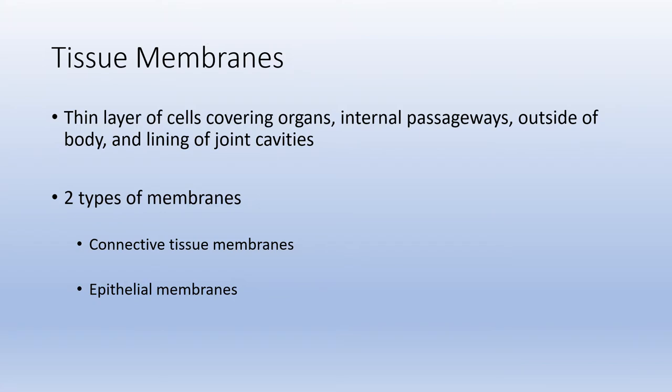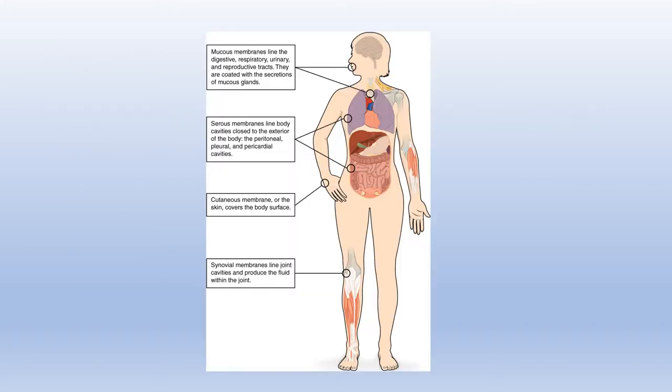Tissue membranes are thin layers of cells. They cover the organs, the internal passageways, the outside of the body, and the lining of your movable joint cavities. There are two main types of membranes, and all of them will be classified as either connective tissue membranes or epithelial membranes.